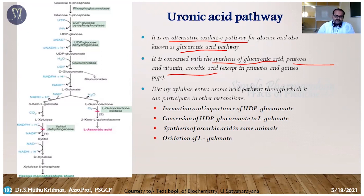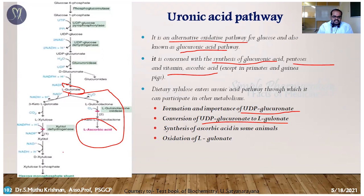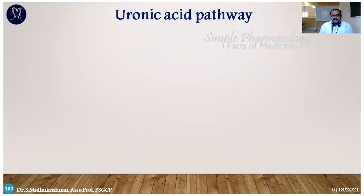The four steps are: first, formation of UDP glucuronate; second, conversion of UDP glucuronate into L-gulonate; third, from L-gulonate it splits into two sub-pathways — one produces ascorbic acid, the other produces xylulose-5-phosphate; fourth, oxidation of L-gulonate converted into xylulose-5-phosphate. So the first step is UDP glucuronate, second is L-gulonate, third is ascorbic acid synthesis, fourth is conversion into xylulose-5-phosphate.